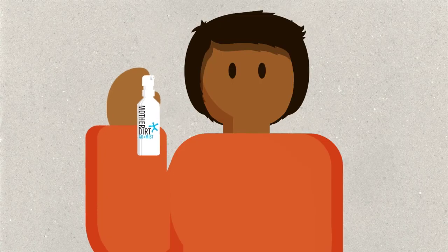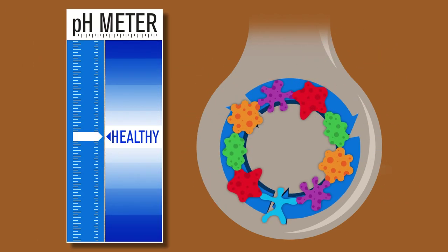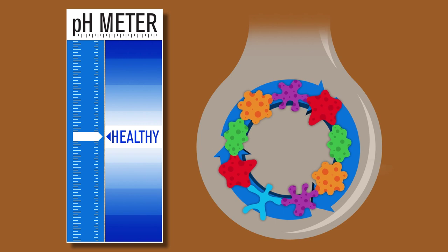But not AOB. On our skin, it turns our sweat into good things. A cycle that creates a healthy pH and keeps other microorganisms in check.